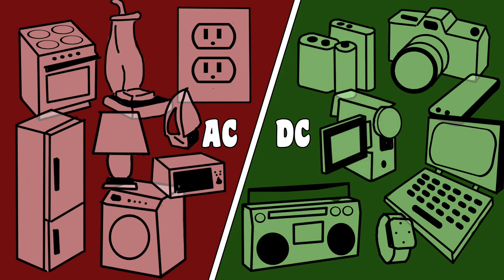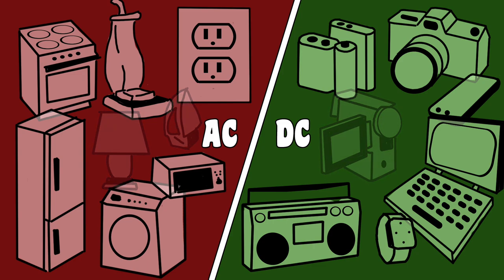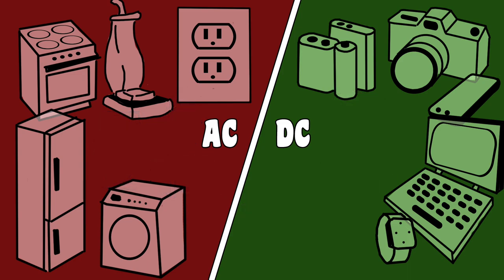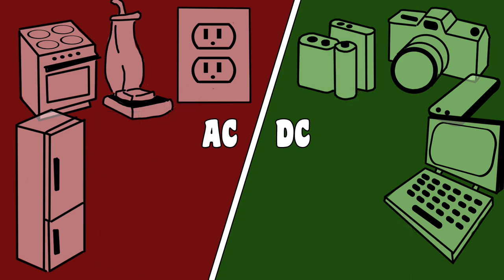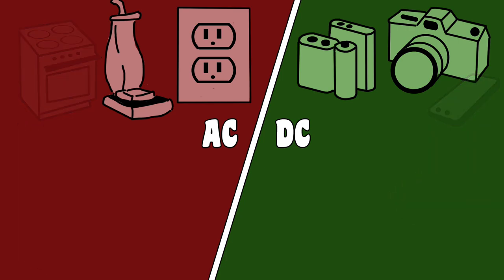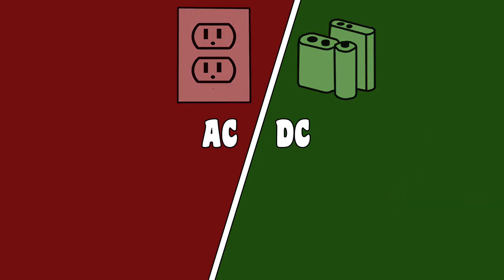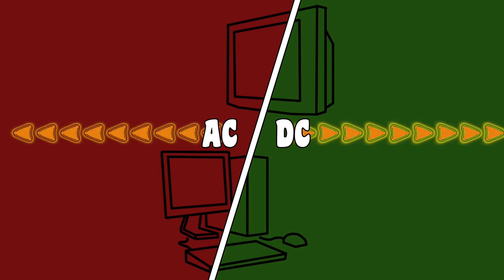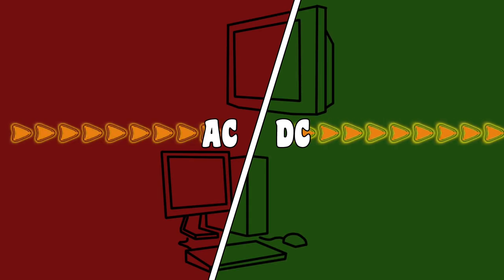So if it plugs into the wall, it uses AC, and if there's a battery inside, it runs on DC. Well, it's not quite that simple. For example, some things like TVs and desktop computers convert AC to DC for their electronic circuitry.